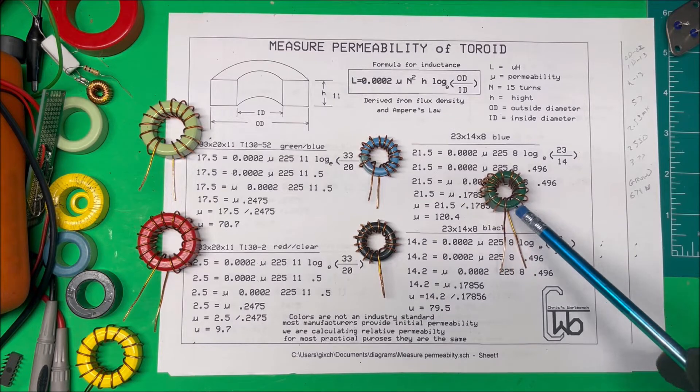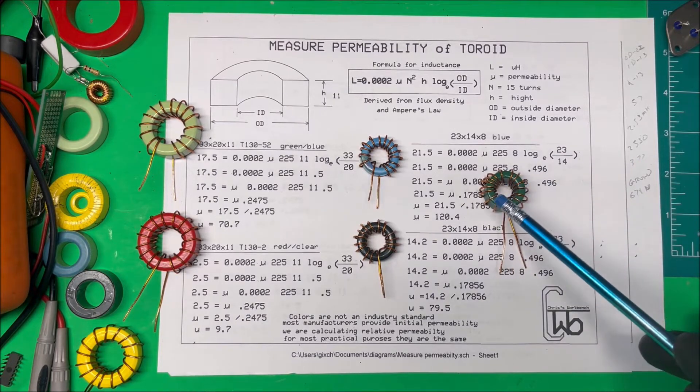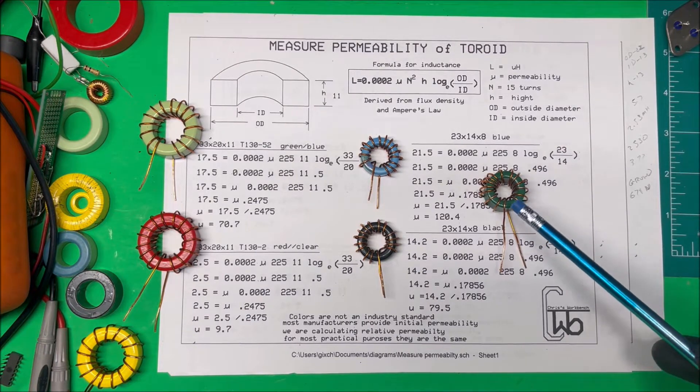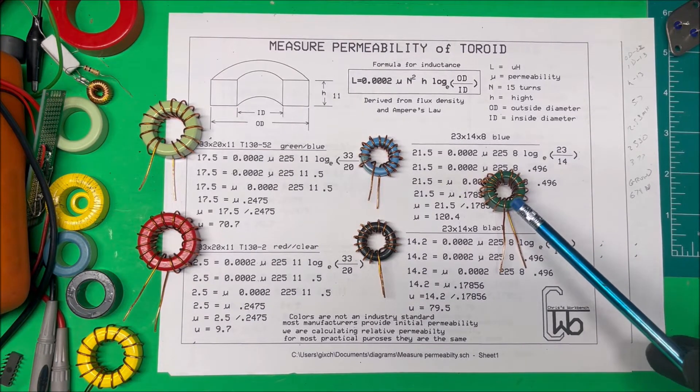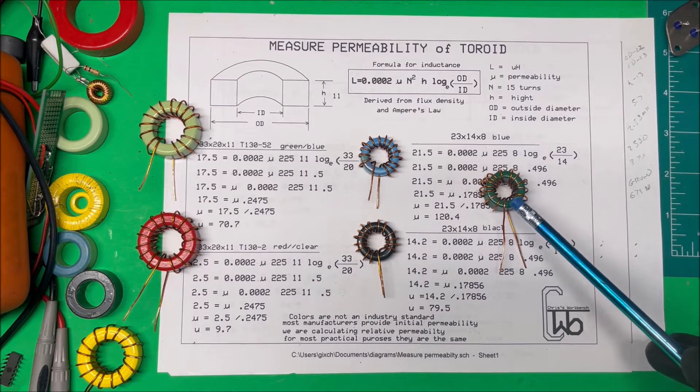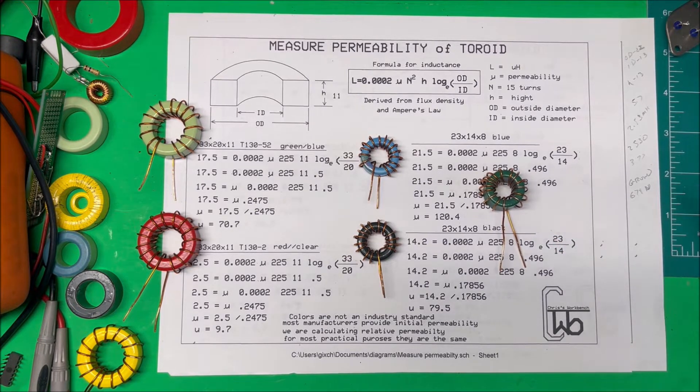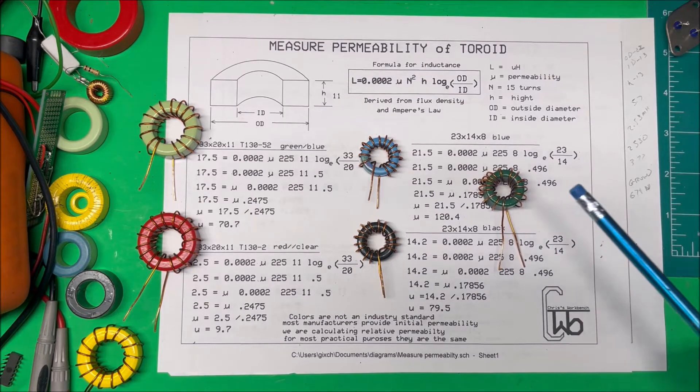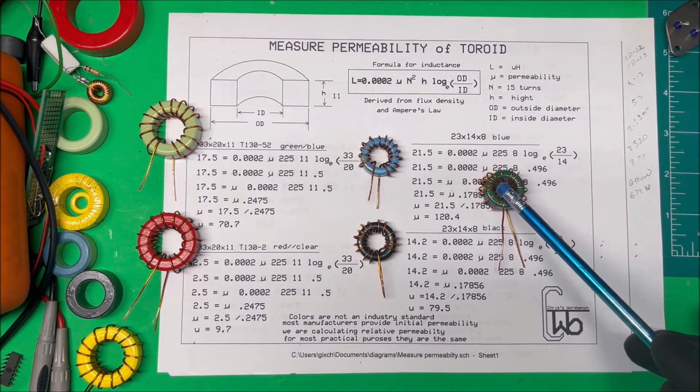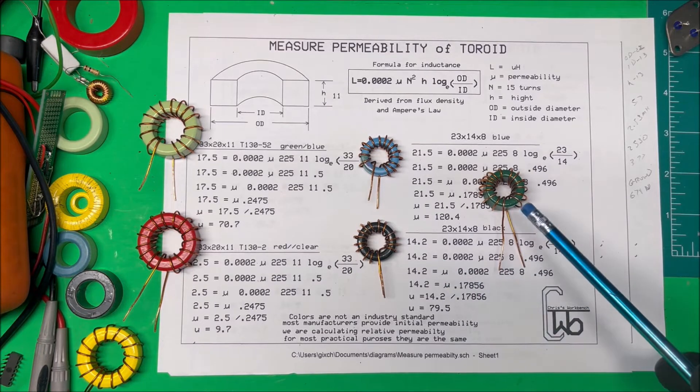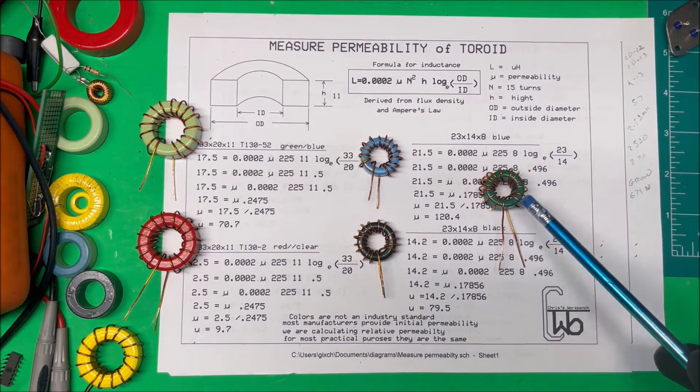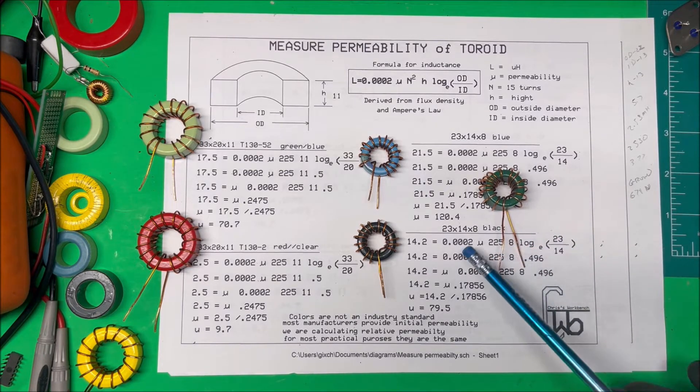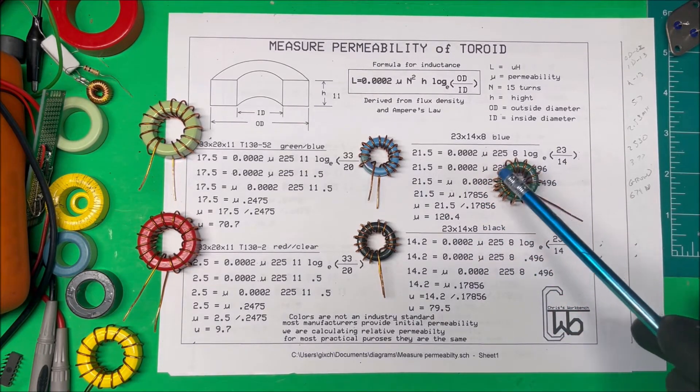Now this one here, this green one, it has an outside diameter of 22, inside 13, and 13 millimeters for the height. On the meter, testing it, it comes out to 2530 micro-Henry's. If I calculate it in its formula, it comes out that the permeability on this core is 671.